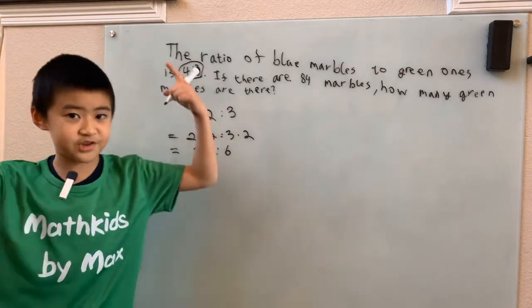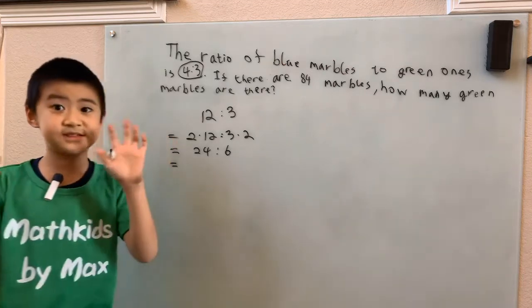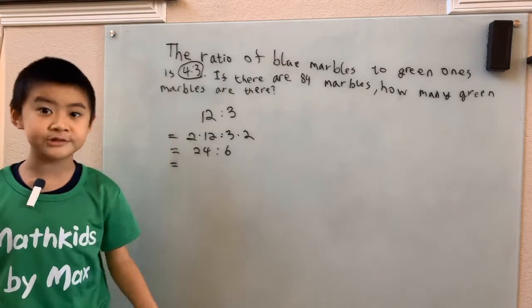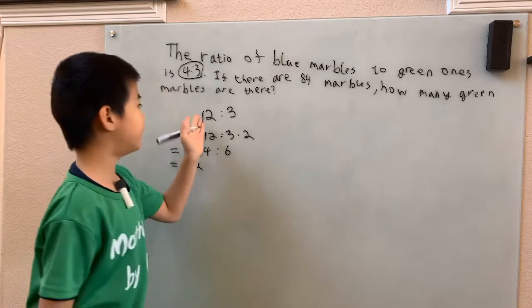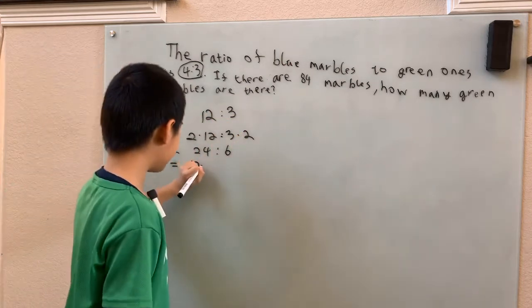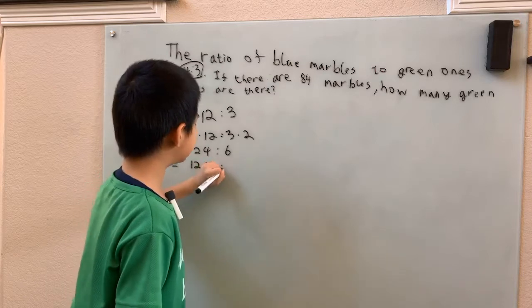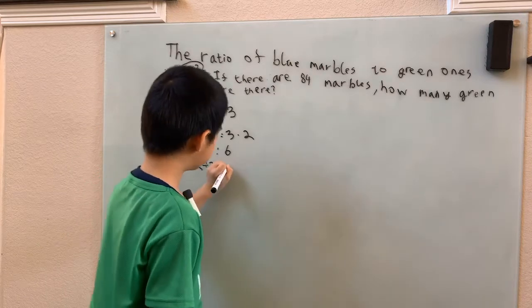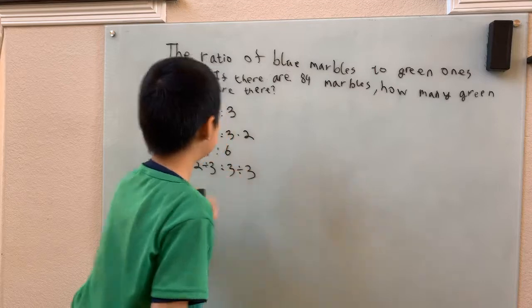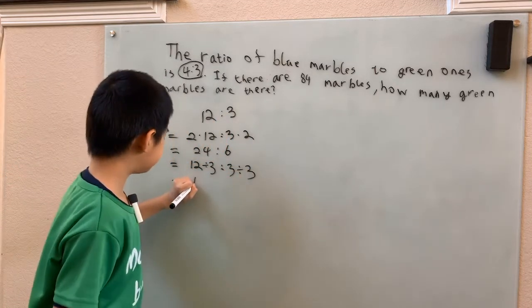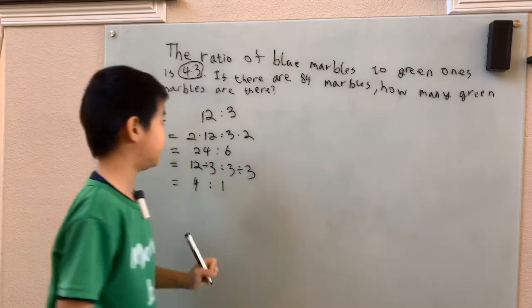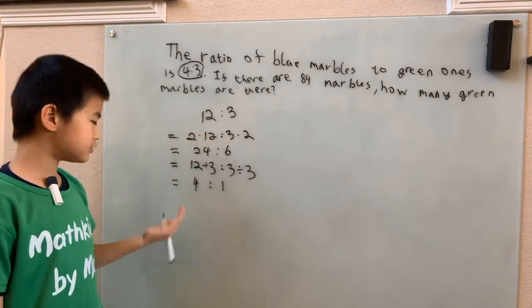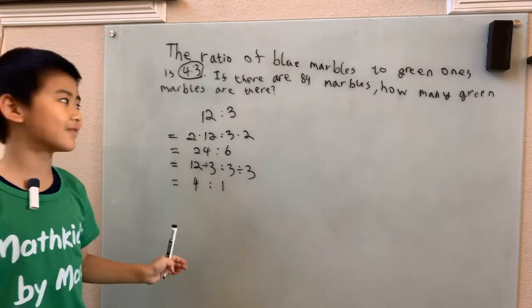And I can also scale ratios down. We call that simplifying ratio, just like how we would simplify any old fraction. So we can divide both of these numbers by 3 and still get the same ratio. If we divide by the same number, that is. And we'll just compute these: 4 here, 1 here. So 12 to 3 is also equal to 4 to 1.